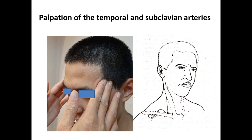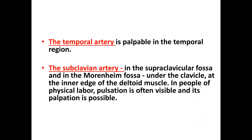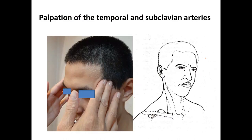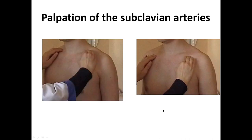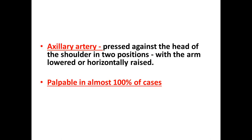The temporal artery is palpable in the temporal region — you see on the first picture palpation of the temporal artery with two fingers. The subclavian artery is palpated in the subclavicular fossa, under the clavicle. You see the points of palpation of the subclavian artery and how to correctly palpate these subclavian arteries.